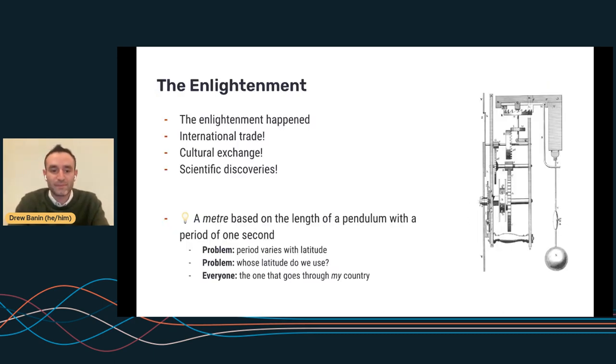So keep fast forwarding. The Enlightenment. It's the 17th, 18th century. And it's a time of great scientific and cultural exploration and understanding. So we've got international trade and cultural exchange and scientific discovery is happening all over Europe. And with this explosion and in particular scientific development, we see that people across borders or different culture societies want to start collaborating with each other, but they start running up against these differing systems of measure.